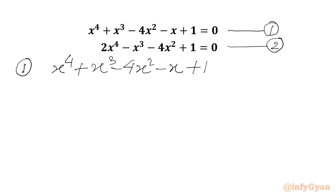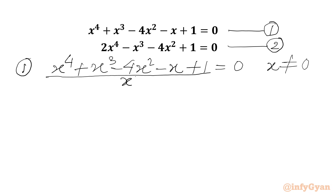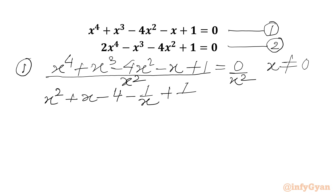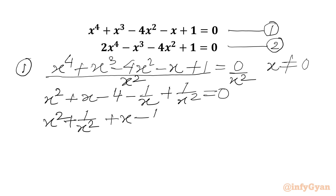Now I can see that x cannot be equal to 0, as it does not satisfy our equation. So I can divide our equation by x² on both sides. So I can write x² + x - 4 - 1/x + 1/x² = 0. We can club x² with 1/x², and x with -1/x, and then minus 4 equals 0.